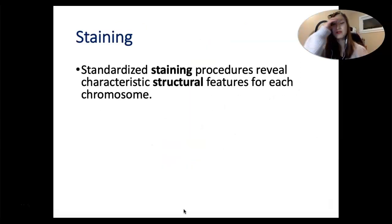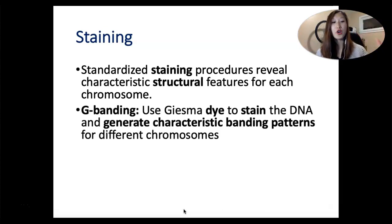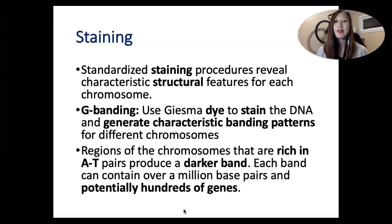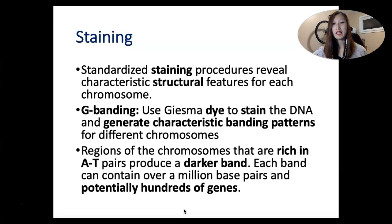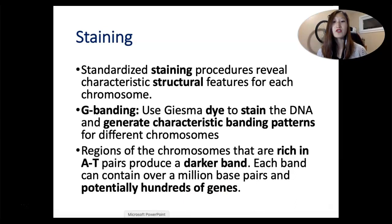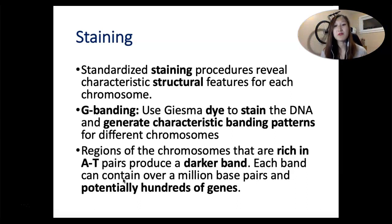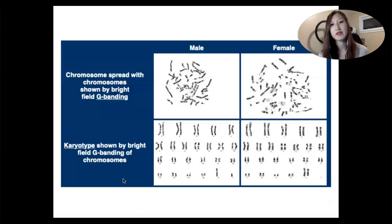When we're talking about staining, you don't need a lot of detail, but you should know that staining shows different banding patterns, because different parts of a chromosome can have different numbers of A-T pairs. The darker a certain region is, the more A-T pairs there are instead of C-G pairs. Depending on which chromosome it is, the pattern of which parts are dark and which are light will be different. It's also important to remember that even though one band seems very small, it actually contains a lot of genes.